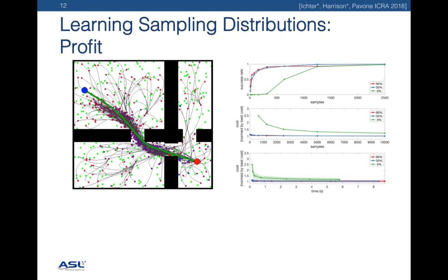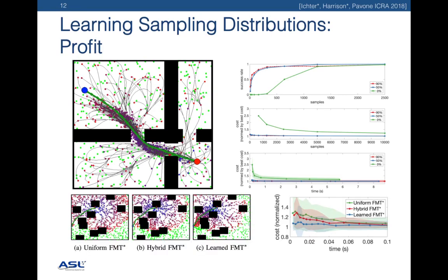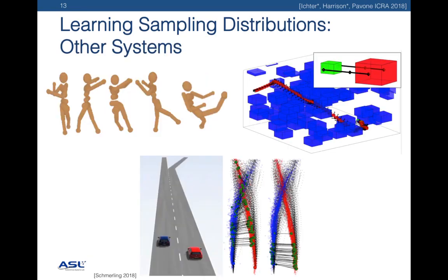The results show the learned distribution is able to solve the planning problem with nearly an order of magnitude fewer samples, and the cost almost immediately converges to the optimal. We also make comparisons to previous state-of-the-art geometric sampling methods and find similar performance benefits.